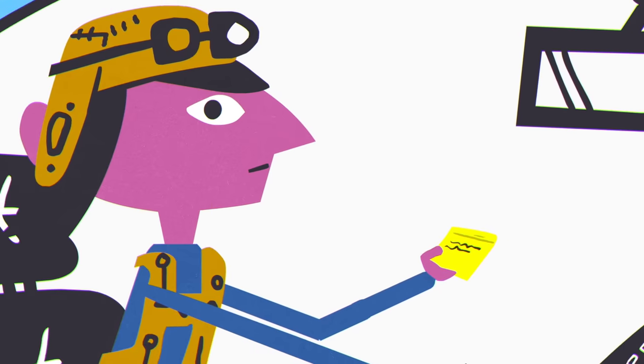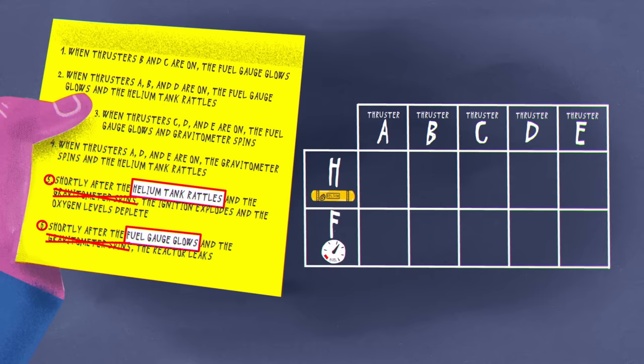Once we know which two errors we need to avoid, we can make a table and use the logic of cause and effect to see which thrusters trigger them. Since the helium tank is fine during the first test run, when thrusters B and C are active, we can assume neither makes it rattle. And from the third run, we know that D and E don't either. That leaves thruster A, which was indeed used in the second and fourth test runs where the helium tank rattled.